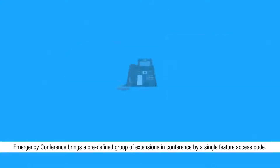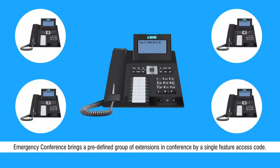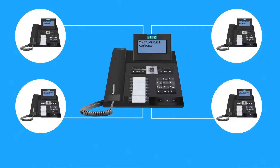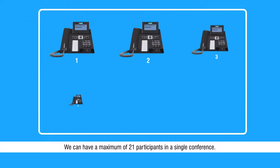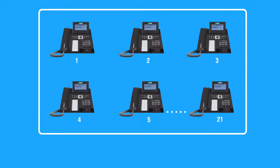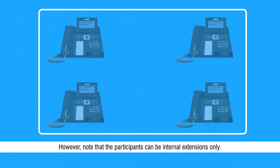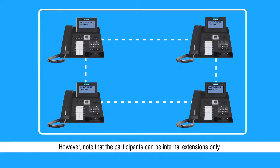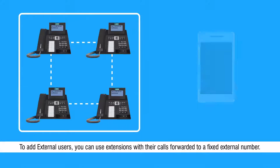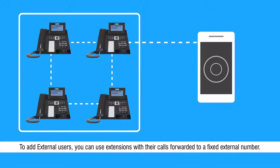Emergency conference brings a predefined group of extensions in conference by a single feature access code. We can have a maximum of 21 participants in a single conference. Note that the participants can be internal extensions only. To add external users, you can use extensions with their calls forwarded to a fixed external number.